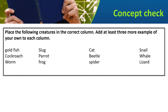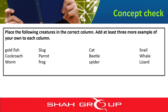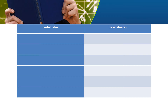You have this question: Place the following creatures in the correct column, and add at least 3 more examples of your own to each column. That means you have a list of animals — you have to fill in which animal is a vertebrate or invertebrate in the correct column.